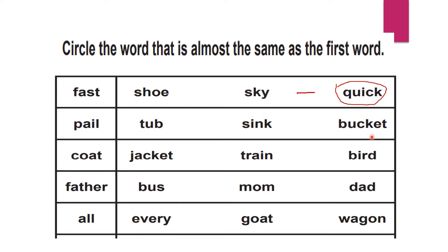Jack fell down and broke his crown, and Jill came tumbling after him. You should link each thing together — then only your grasping will increase. So here, 'pale' means bucket. We will give a hyphen — hyphen indicates meaning — so pale means bucket.